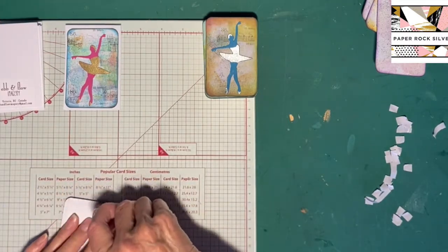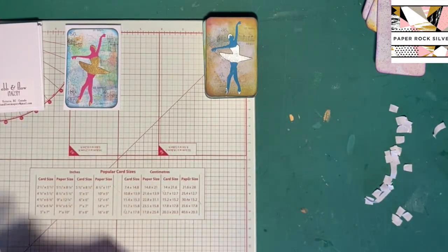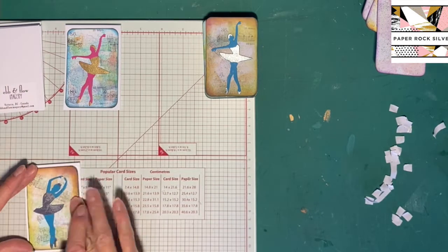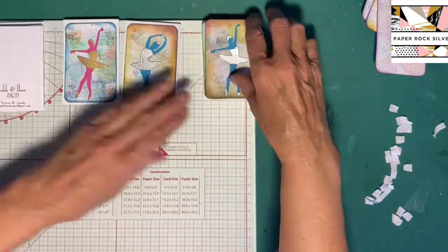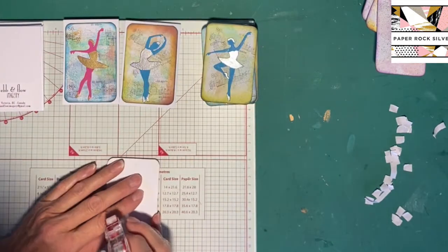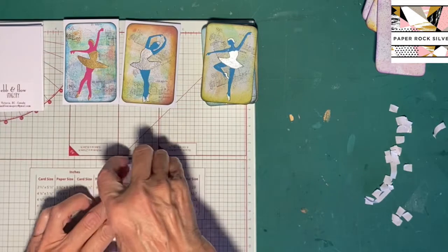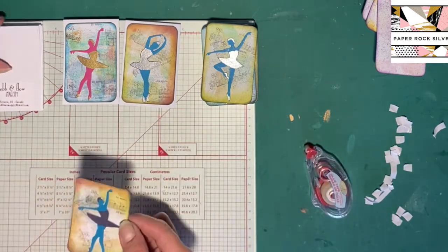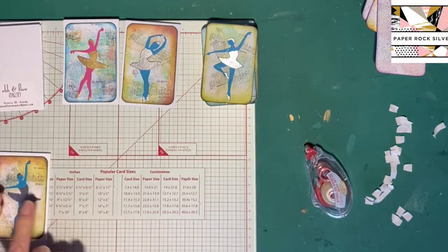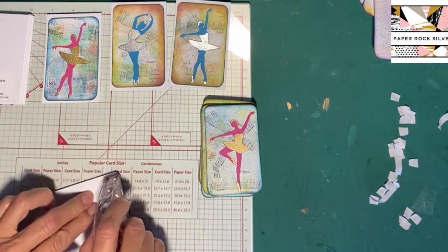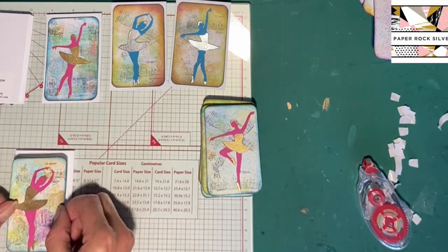I used a stamp that was music, the top line of a bar music, and I stamped it all directions on the background just to make it look like she's dancing in music. Turned out really fun, lots of black splashes on the back and I think I did some copper splashes too.